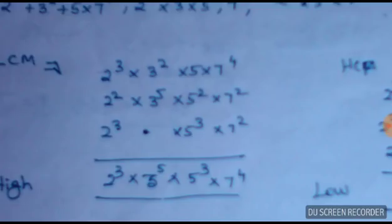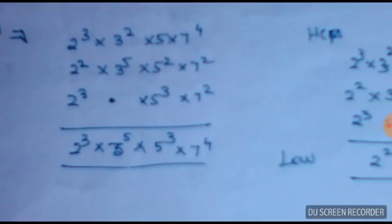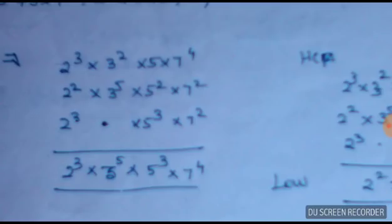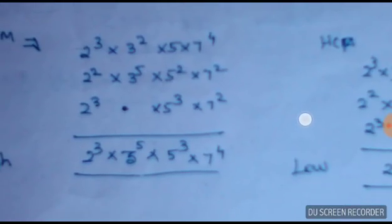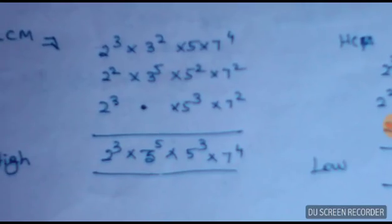Okay, we have three families. So if you have one, you will get this. Let's take this one — 7 to the power 4, 7 power 2, 7 power 2. Take the highest: 7 power 4. Now for 5: 5 power 2, 5 power 3 — take 5 power 3. For 3: 3 power square, 3 power 5 — take 3 power 5. For 2: 2 power 3, 2 power 2, 2 power 3 — take 2 power 3.